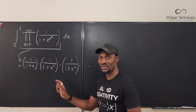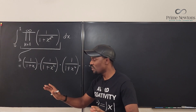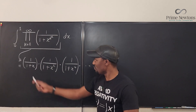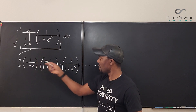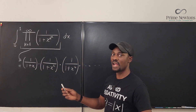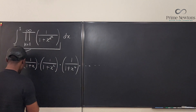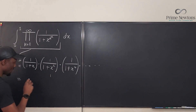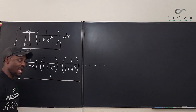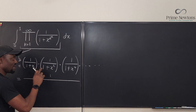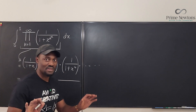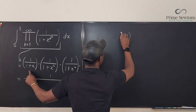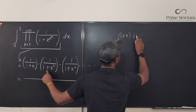We're multiplying, not adding. So let's multiply all the numerators: 1 times 1 times 1 to infinity is just 1. Now let's see what happens when we multiply the denominators. Start with the first two: (1 + x) multiplied by (1 + x squared).